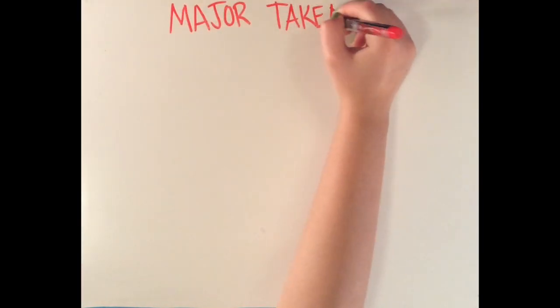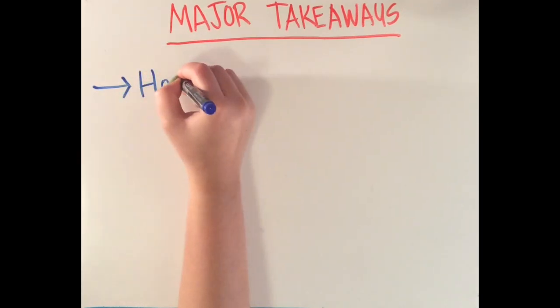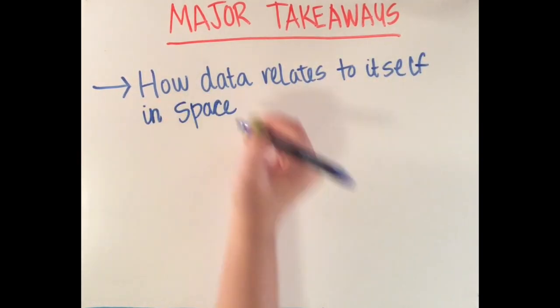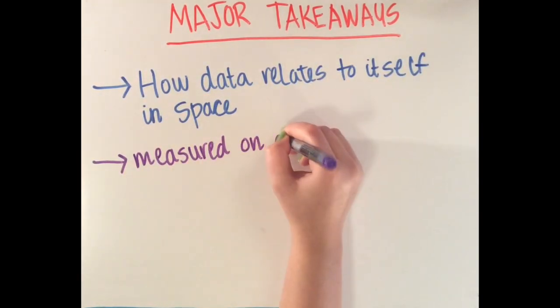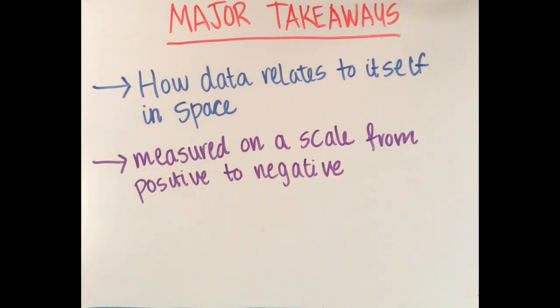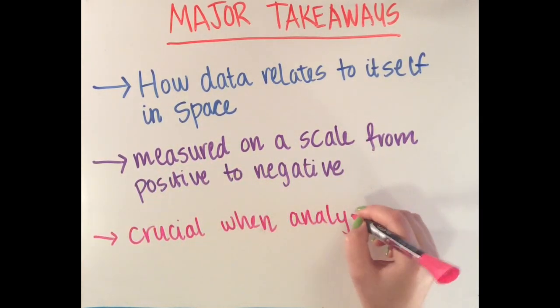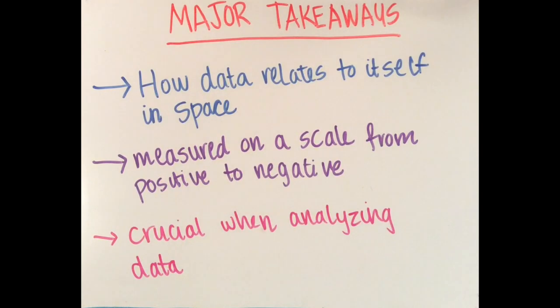In conclusion, spatial autocorrelation helps us understand how data relates to itself in space, it is measured on a scale from positive to negative, and it is crucial to know the spatial autocorrelation of a dataset when trying to understand patterns in the data.